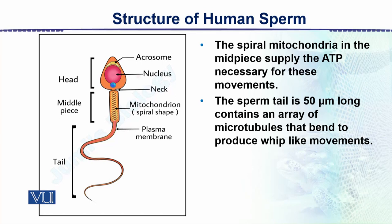In this diagram one can see the detail of the sperm. The head has a cap-like acrosome on top, followed by the haploid nucleus, and then a very short tail, followed by the midpiece.